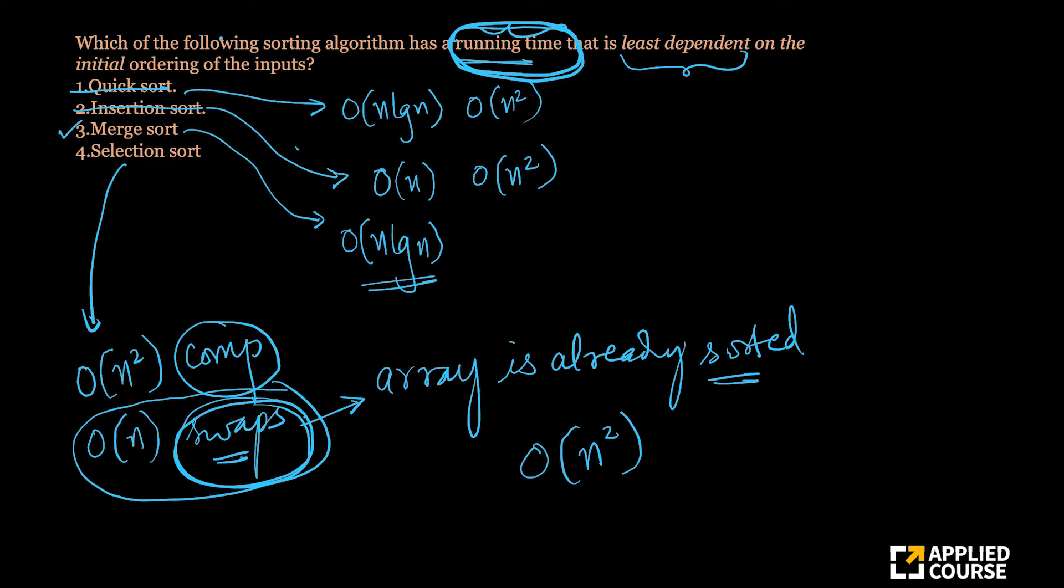So it is a slightly tricky question. And I was also confused when I read this, because selection sort also has for all cases order of n square. But if you think slightly deeply in terms of comparisons and swaps, you will realize that merge sort is the answer.